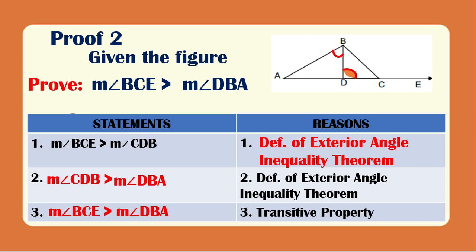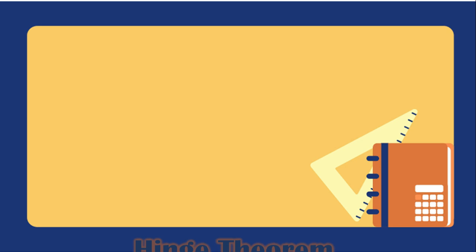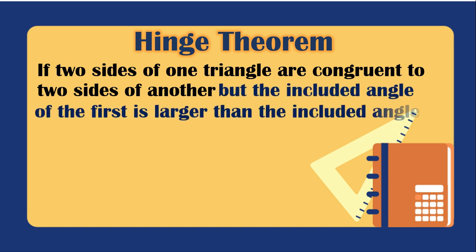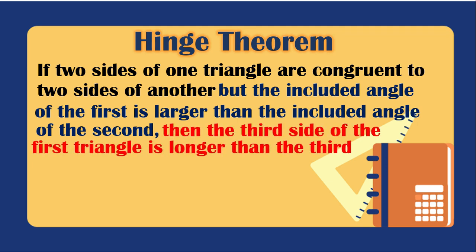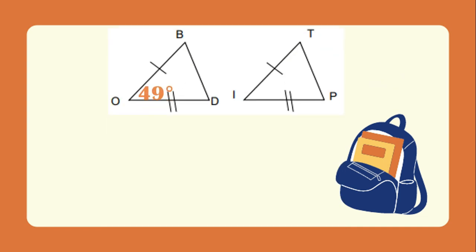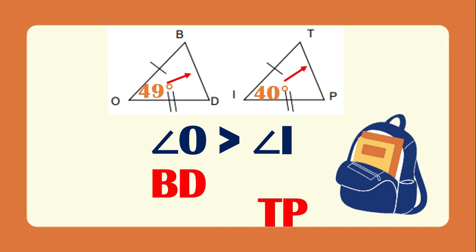Let's have inequalities in two triangles, starting with the Hinge Theorem: if two sides of one triangle are congruent to two sides of another but the included angle of the first is larger than the included angle of the second, then the third side of the first triangle is longer than the third side of the second. This is the SAS Inequality Theorem. Using this figure, angle O is 49 degrees and angle I is 40 degrees, so angle O is greater than angle I. The opposite side of angle O is BD, and the opposite side of angle I is TP. Therefore, BD is greater than TP.